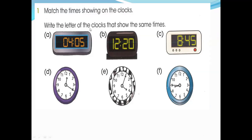Next question: match the time shown on the clocks and write the letter of the clocks that show the same time. This is a digital clock and this is an analog clock. Four-oh-five means four hours, five minutes - so find the matching clock showing 4:05. For 12:20, find the clock showing twelve hours twenty minutes and match them.